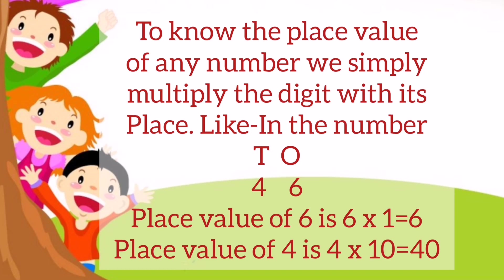Remember, to know the place value of any number, we simply multiply the digit with its place. Like in the number 46, place value of 6 is 6 × 1 = 6. Place value of 4 is 4 × 10 = 40. Here 1 and 10 are the place of the digits where 1's is the place of 6 and 10's is the place of 4.